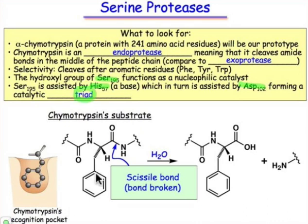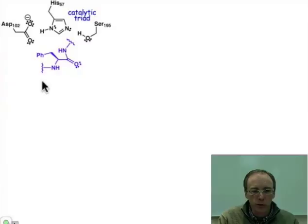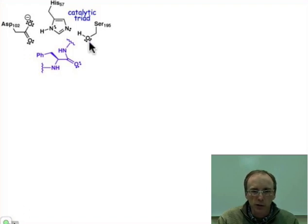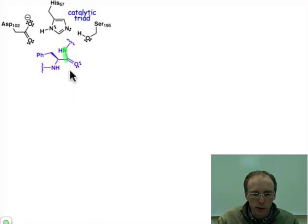Let's take a look at the molecular mechanism. There's the catalytic triad: aspartate 102, histidine 57, and serine 195, which is going to function as the nucleophile. The bond that we're going to cleave — go ahead and highlight it in your notes — is right there. The first step is going to be general base catalyzed nucleophilic addition to the carbonyl group of that peptide bond.